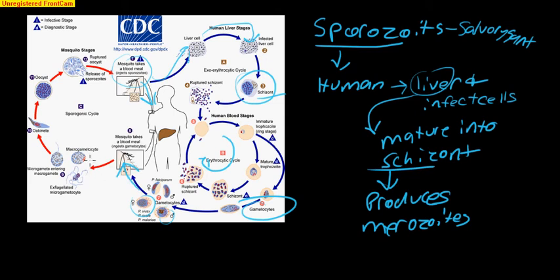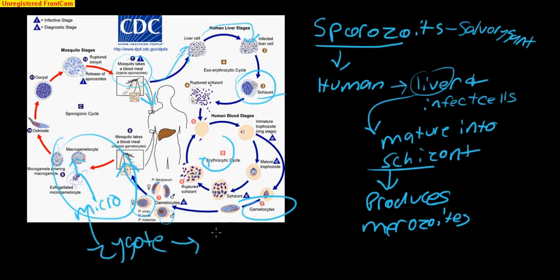Now, what happens is the micro-gametocyte goes into the macro-gametocyte and it forms a zygote. So what happens is the micro goes into the macro and this whole thing forms a zygote. This zygote matures into the oocyst. We're just going to skip that stage. It matures into the oocyst. Now, what happens is this oocyst goes through a certain stage, a certain period of time and this ruptures and produces the sporozoites.